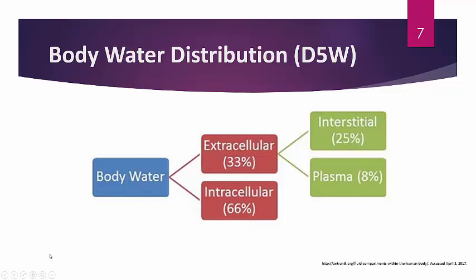Regarding body water distribution with hypotonic solutions such as D5W: two-thirds (about 67%) flows to the intracellular space and one-third goes to the extracellular space. Of that extracellular portion, 25% total goes to the interstitial space and 8% goes to the plasma space. So when you infuse D5W, only about 8% or 83 mL actually reaches your intravascular plasma space.